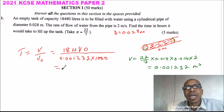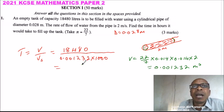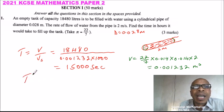So when you do that using your calculator again, divide 18,480 by 1.232, and that is giving me 15,000 seconds. So time in hours equals 15,000.